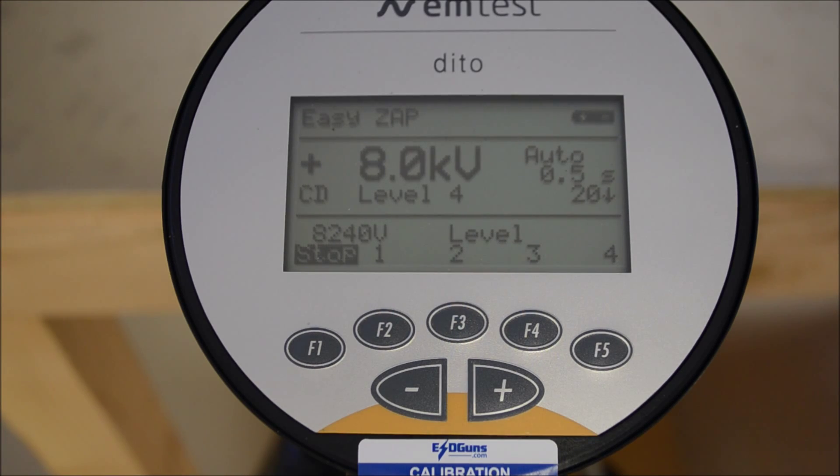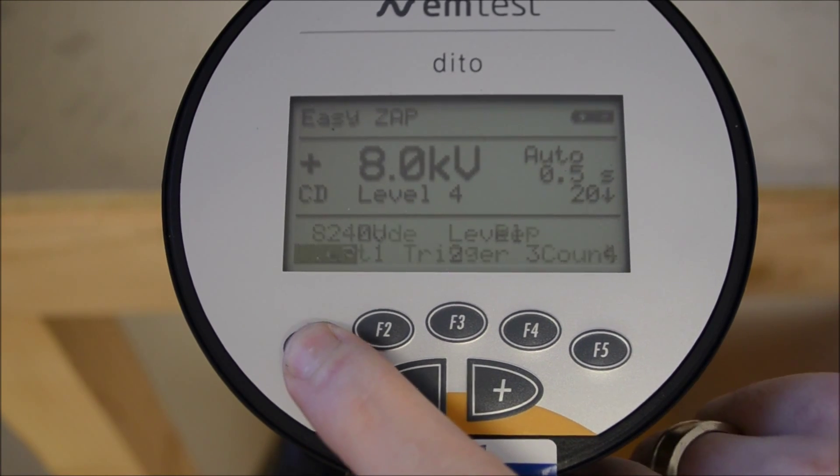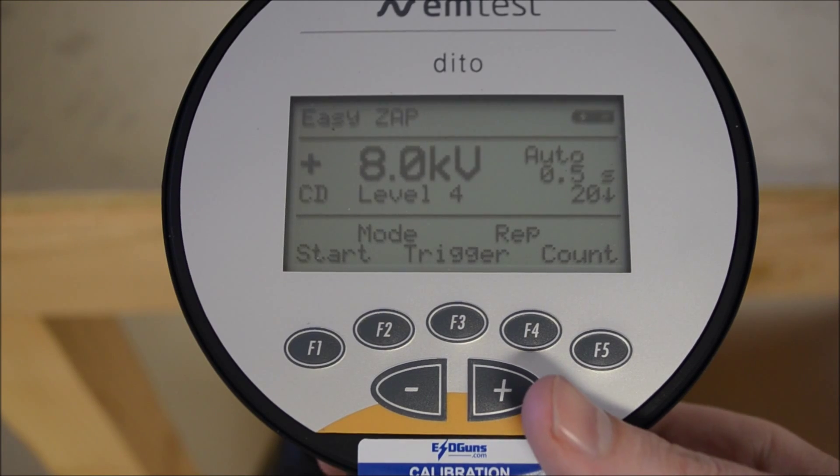Once the test sequence is complete, press F1 again to deactivate the trigger from discharging. The trigger can now be utilized to back out to the main menu.